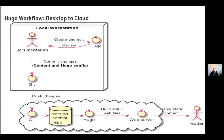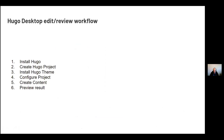That was the theoretical explanation. Now we're going to go through a real example. What I'm going to do is present an example starting from setting up Hugo, generating some content, and going through a review loop — that's all happening on my local workstation. Then we're going to see how to use an existing cloud service from GitLab and set up a build deployment process so that whenever we push changes to the cloud, we automatically generate a new website.